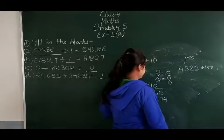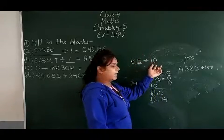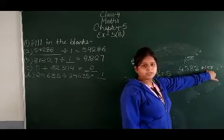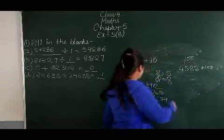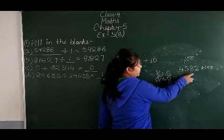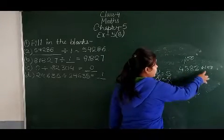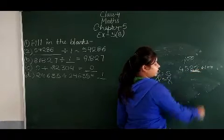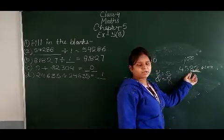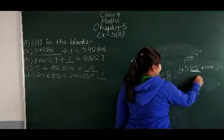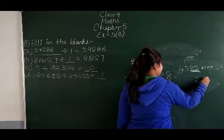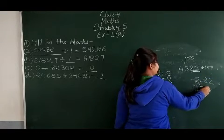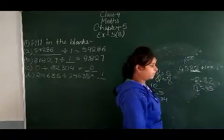Now for division by 100: in 10 there is one zero, and in 100 there are two zeros. So when dividing by 100, the last two digits — the one's and ten's place — become the remainder. For example, if we have a number and divide by 100, the remainder comes from the last 2 digits, say 82, and the quotient from the remaining digits, say 45.